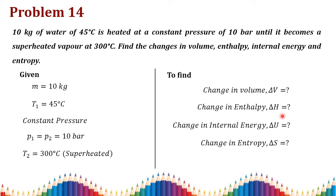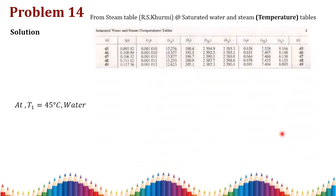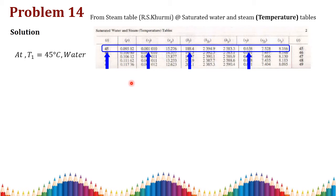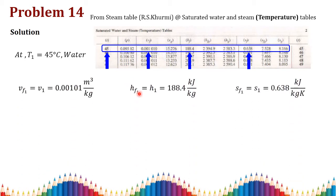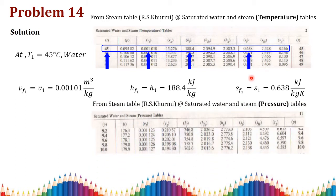Since mass is given, these are total quantities (not specific), so we find specific values and multiply by mass. For State 1, temperature t1 equals 45°C and the condition is water (liquid), so we take fluid values: v1 equals vf1, h1 equals hf1, and s1 equals sf1, reading these directly from the saturated water table.